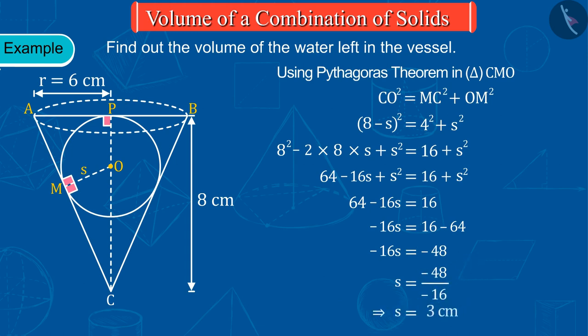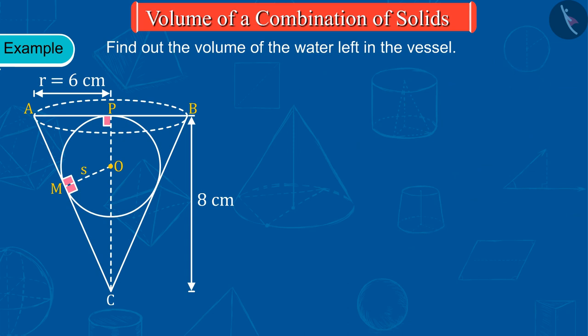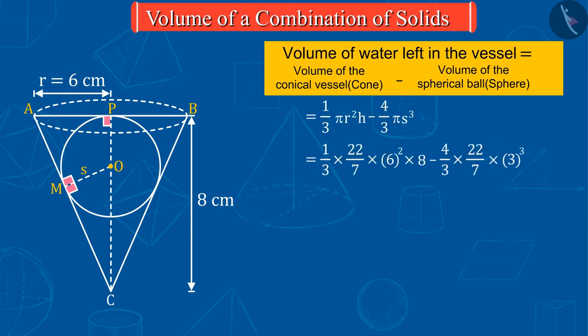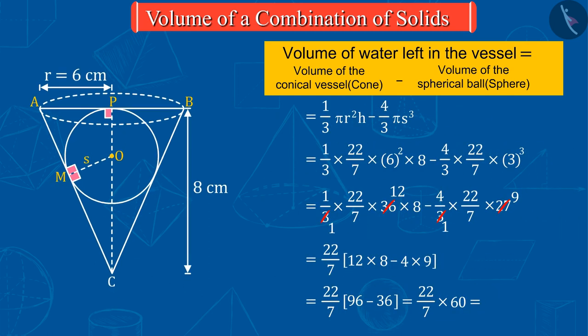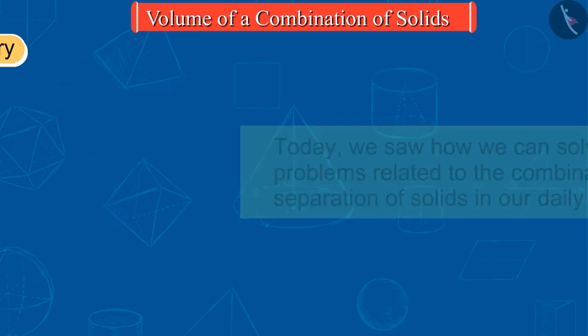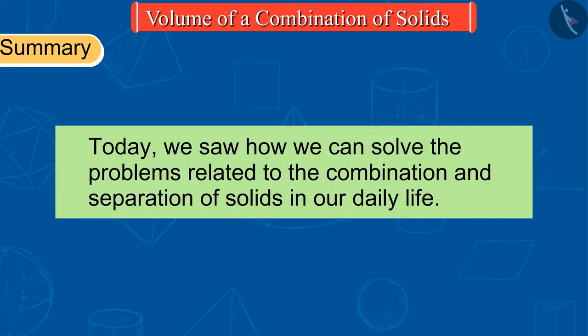So let's find the volume of the cone and the sphere and solve it further to get the volume of the remaining water, which is equal to 188.57 cubic centimeters. Today we saw how we can solve problems related to the combination and separation of solids in our daily life.